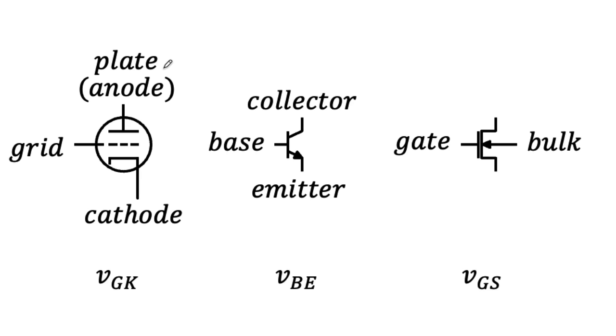For something like a vacuum tube, the plate is physically very different than the cathode. The collector is doped differently than the emitter. But on a MOSFET, there's really no difference between those two terminals. The terms drain and source only become meaningful operationally when we apply a potential difference between the two terminals of the channel.